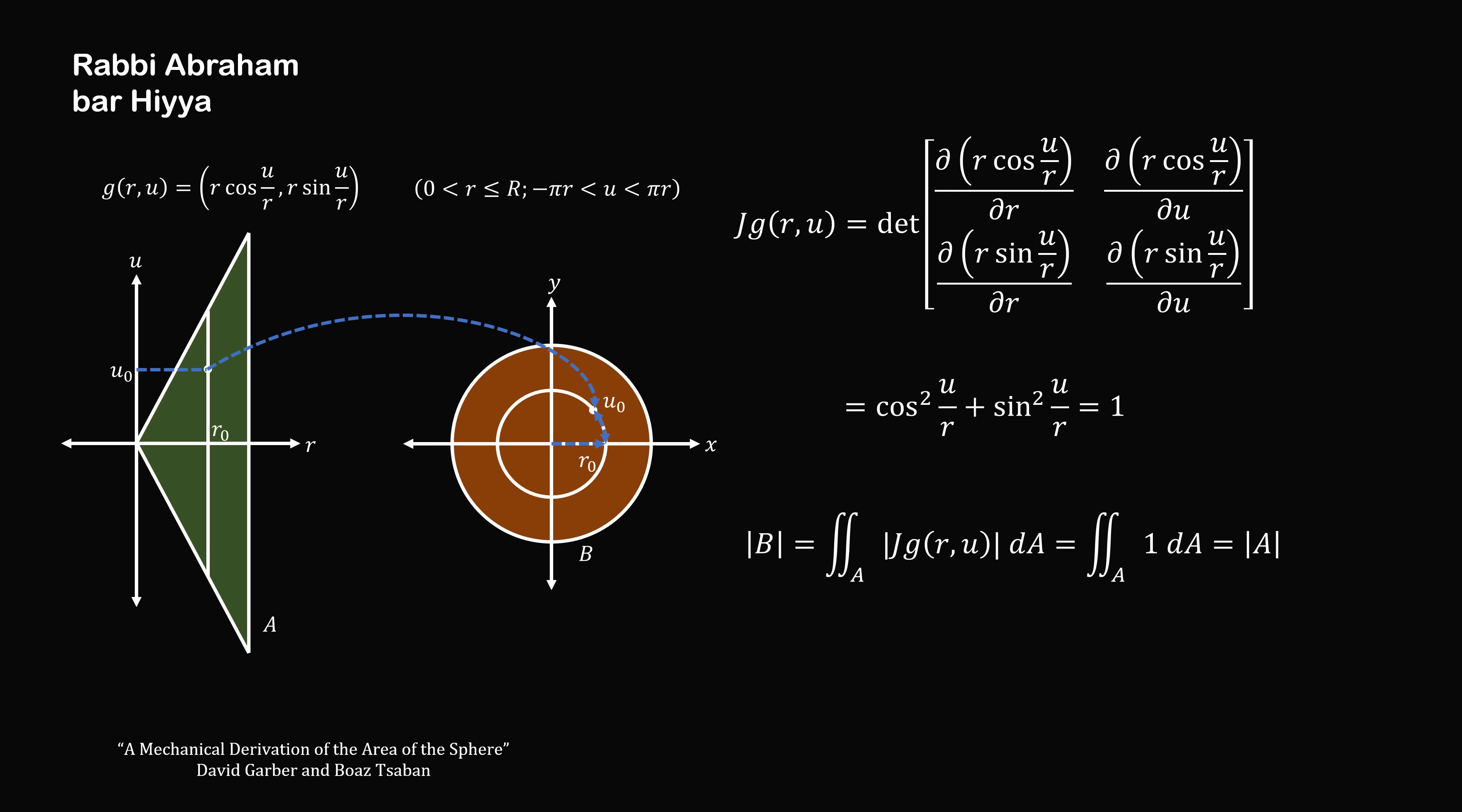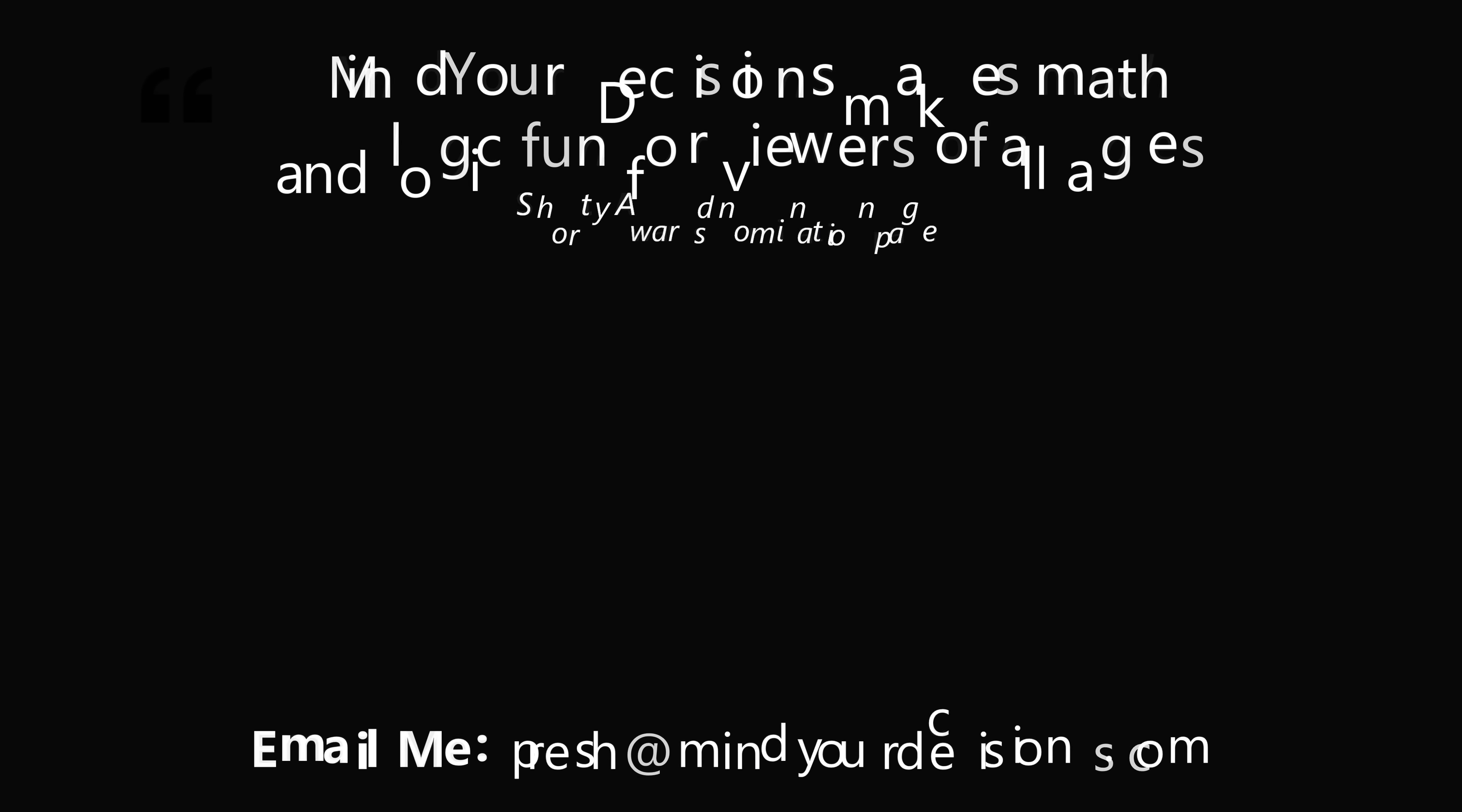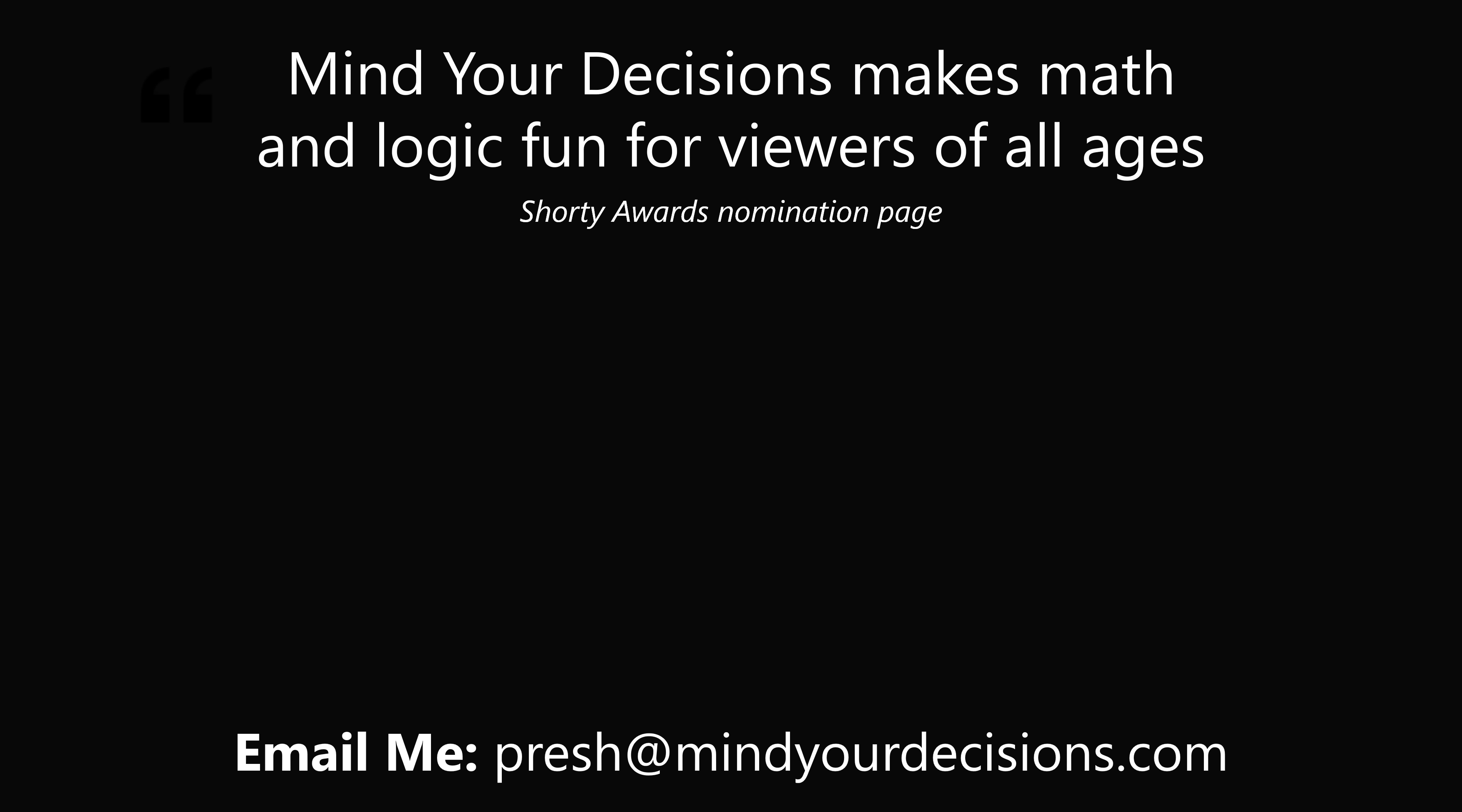It is truly amazing that the ancients were able to figure out the area of the circle is equal to pi r squared, and it is still a fact that fascinates us to this day. Thanks for making us one of the best communities on YouTube. See you next episode of Mind Your Decisions, where we solve the world's problems, one video at a time.